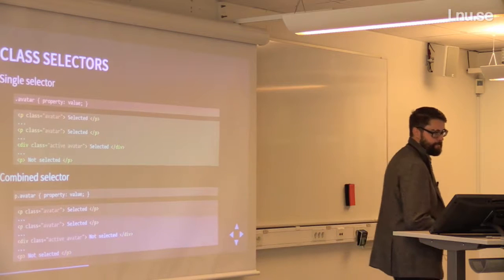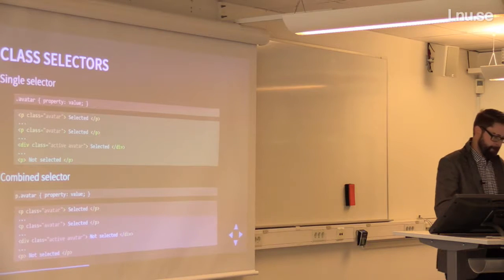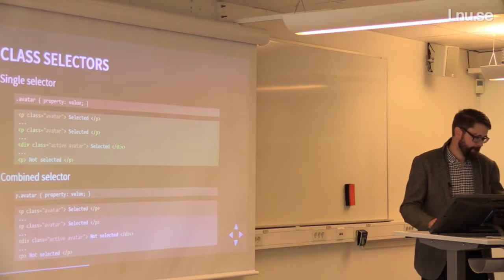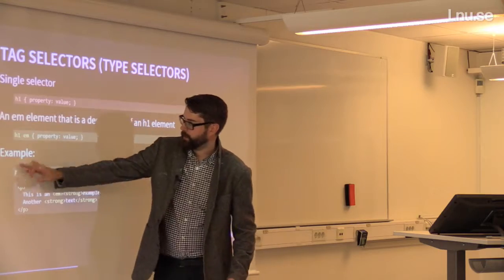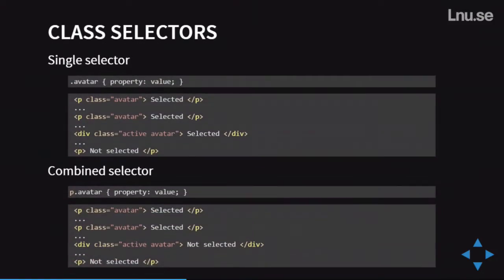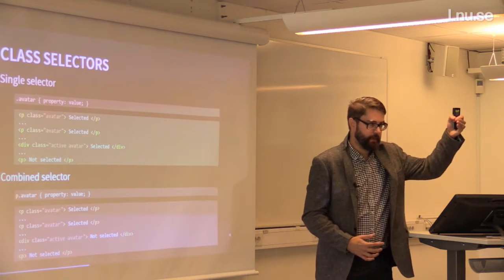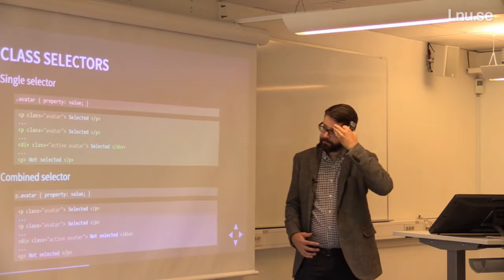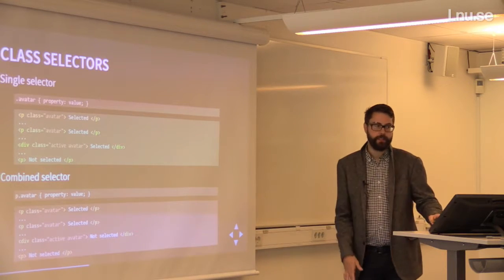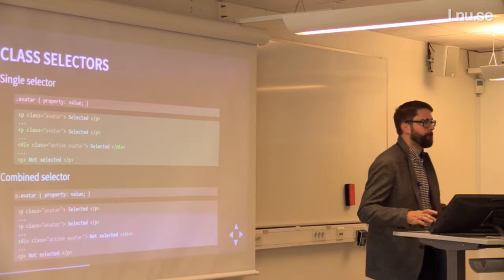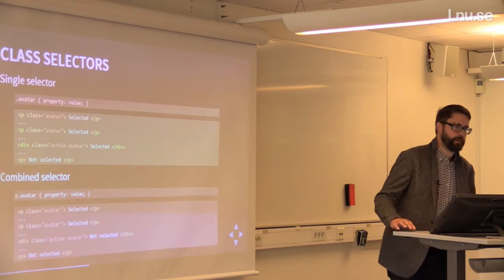The order of stylesheets also matters when you have multiple stylesheets linked — I'll get to that. The slides are already on the webpage and on GitHub. If you find errors, please change them and do a pull request. Pseudo-class selectors exist because some elements have different states. The A tag is the most common example — links can be visited, unvisited, have focus, or be hovered. The browser default is blue for unvisited and purple for visited links, as I mentioned in the last lecture.